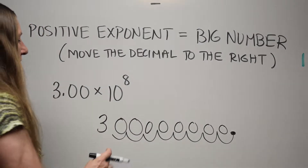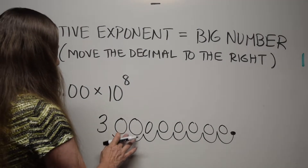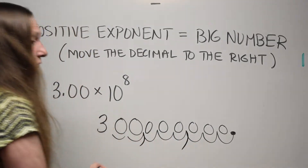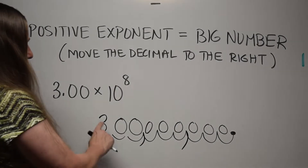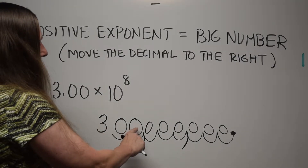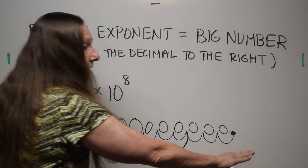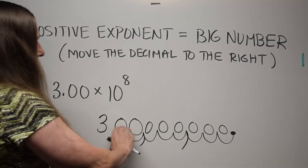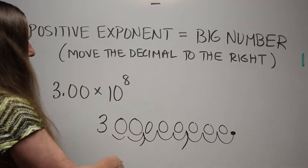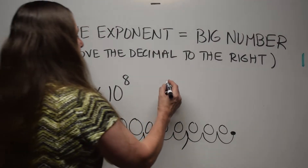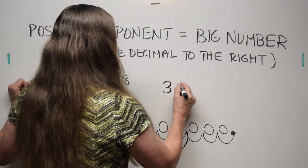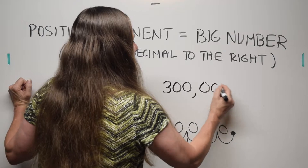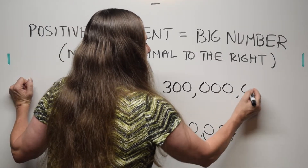We've made a bigger number. We put in all the zeros. So now what number is this? We've got one, two, three zeros — one, two, three zeros. This is 300 million. The number is 300 million.